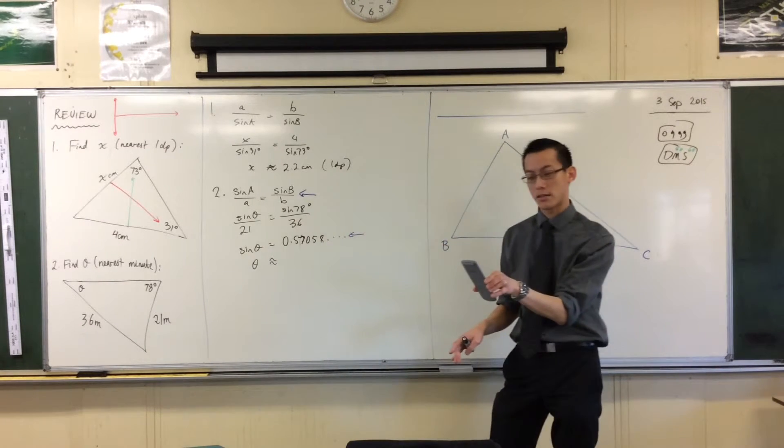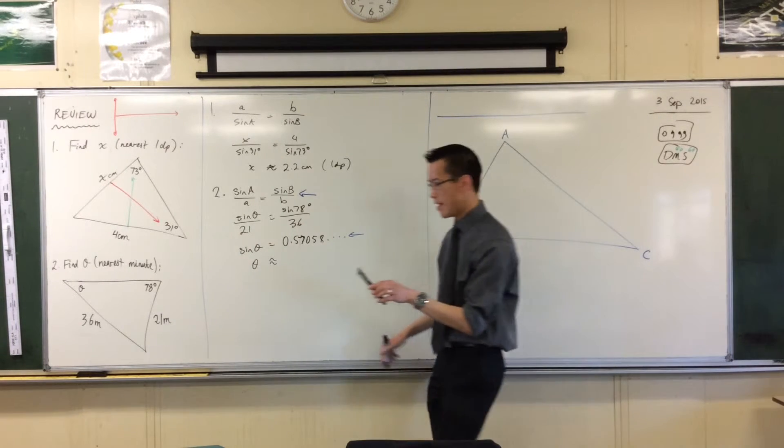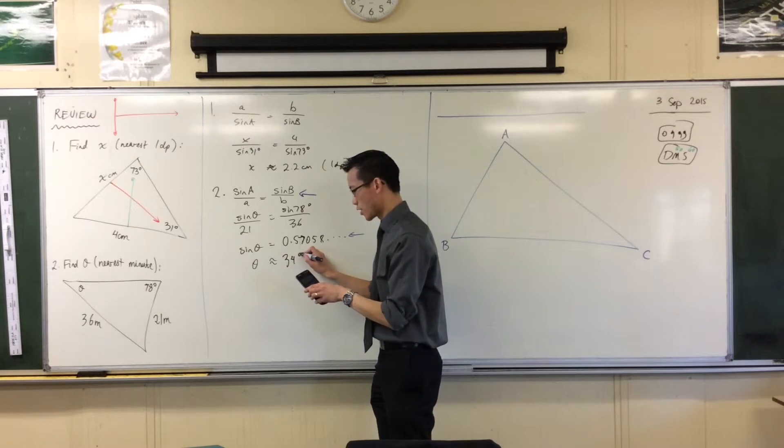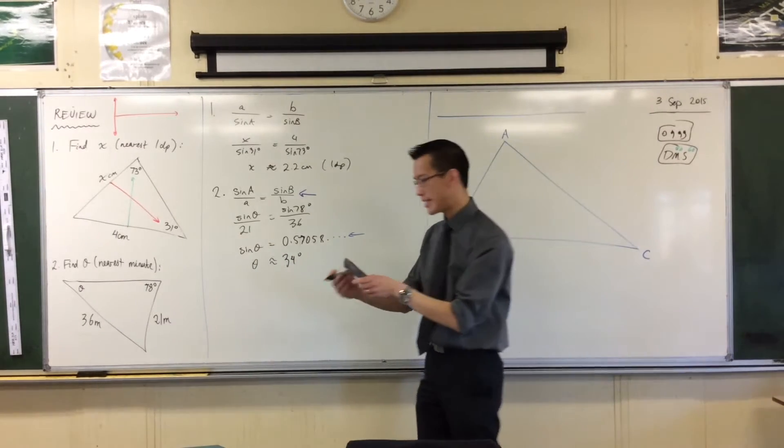Okay? So we're getting 34.79. Yeah? That checks out? Yeah. Okay? So you hit your degrees and seconds button and it gives you this. 34 degrees and how many minutes? 47. 47.